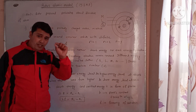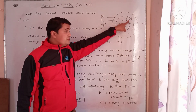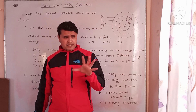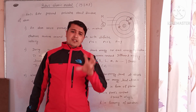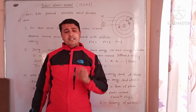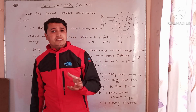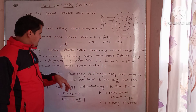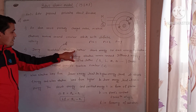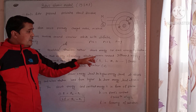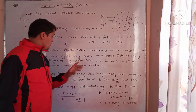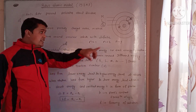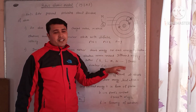The second postulate states that during the revolution of electrons around the circular orbit, the energy is neither liberated nor absorbed. This energy is fixed for the electron — the energy of the revolving electrons remains constant.